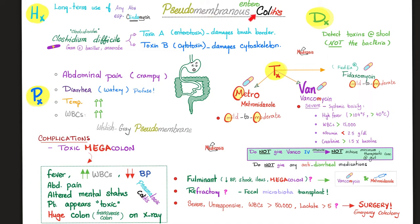Signs and symptoms of C. diff colitis include crampy abdominal pain, watery diarrhea, high temperature, and leukocytosis. Biopsy will show the whitish-grayish necrotic pseudomembrane. As a complication, toxic megacolon can develop — the patient is very sick in the ICU with fever, high leukocytosis, low blood pressure, abdominal pain, and altered mental status.